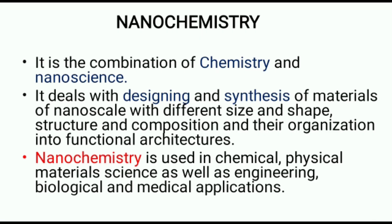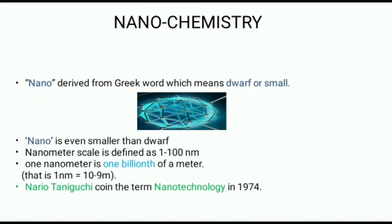It is about different ways to transform material into solution to solve problems. Chemistry mainly deals with degrees of freedom of atoms in the periodic table, but nanochemistry brings other degrees of freedom that control material behavior.